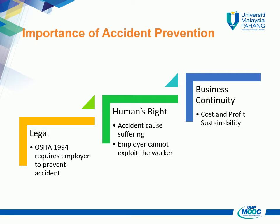And lastly, for the sake of business continuity. Accident is costly. Accident can involve an organisation with litigation, which may not only involve high costs but also affects its image. Above and beyond, accident needs to be avoided as a measure for business sustainability. The company involved needs to shoulder direct and indirect costs.